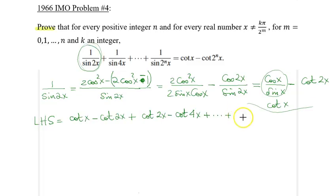the last term would be cotangent 2 to the n minus 1x, minus cotangent 2 to the nx. And now we're in good shape because all the consecutive terms cancel out, and all we have left is cotangent x minus cotangent 2 to the n times x. And that's the desired result, and we're done.